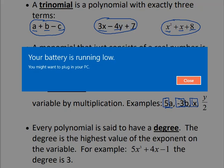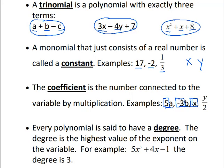In y over 2, this one's a little tricky. The number in front of the variable is understood to be 1 if not shown. So this could also be written as one-half times y, meaning this could also be written as 1/2 y. So the coefficient would be 1/2.